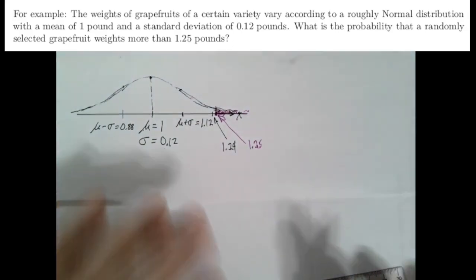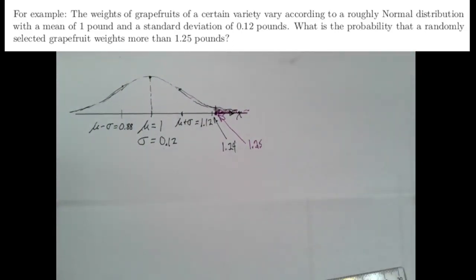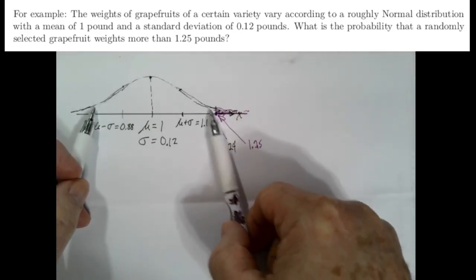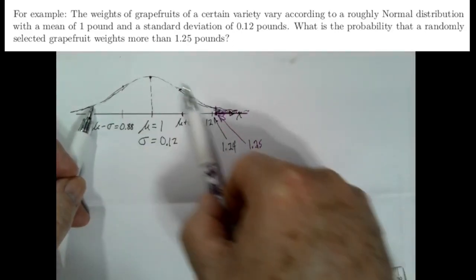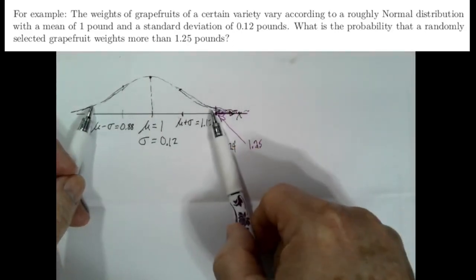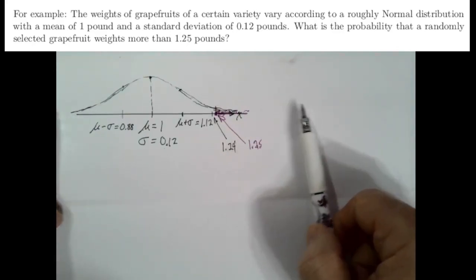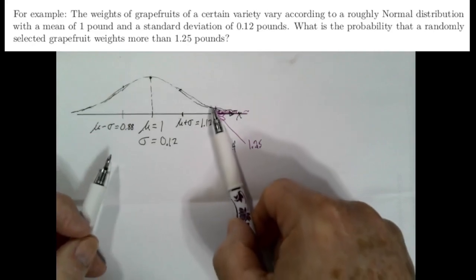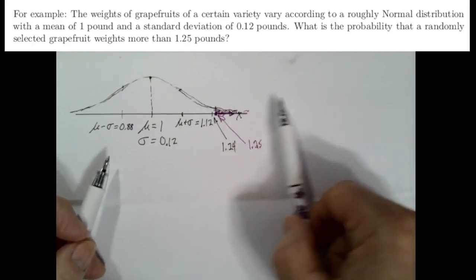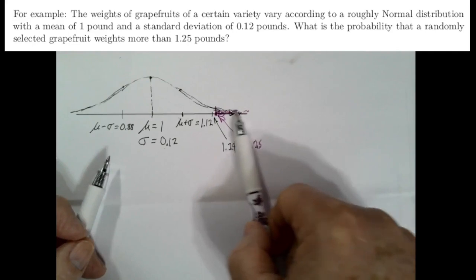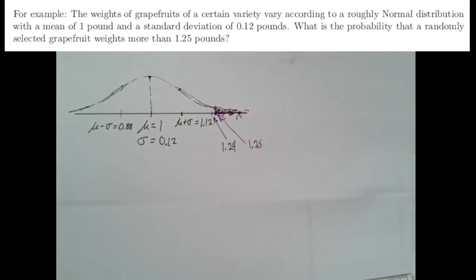It's going to be a pretty small probability. As an estimate: within two standard deviations of the mean, the area is 95% of the population. Outside of that is 5%, so above the upper bound has to be about 2.5% of the population. This area is obviously less than 2.5%.